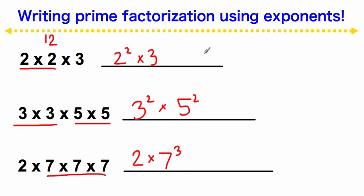This is just a very brief overview of how you use exponents when writing prime factorization, and we'll go more into this in depth in class. Let's do a couple of examples of factor trees so you can get used to this. I want you to follow along in your notebooks. Let's make a factor tree for the number 90.